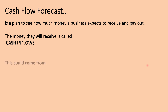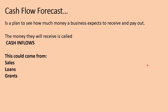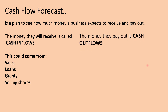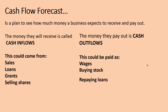Cash inflows are the money a business will receive and they could get it from various places. They could get it from selling things — Domino's Pizza will get cash inflows from customers buying pizzas. Businesses might take out a loan, for example Domino's might borrow £10,000 to buy a new car — that would be a cash inflow. They could get a grant from the government or sell shares, but the main way businesses get cash inflows is from sales. The money they pay out is called cash outflows — this could be wages, buying stock, repaying loans, or bills.